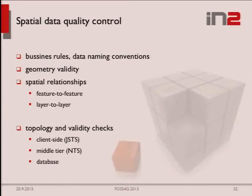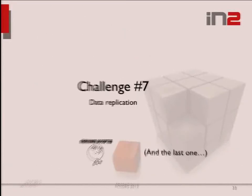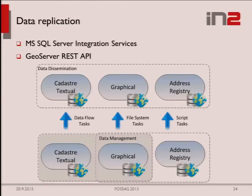Because all the systems are interconnected, and the GeoPortal disseminates data, we didn't want to overburden our internal infrastructure with public access. So we replicate the database and GeoServer Catalog from one system to another. For that we use Microsoft SQL Server Integration Services and the GeoServer REST API for reconfiguration of data stores when moving them from one storage to another.